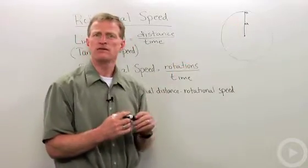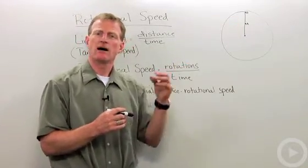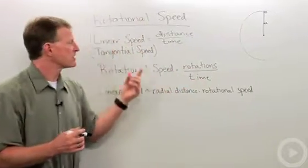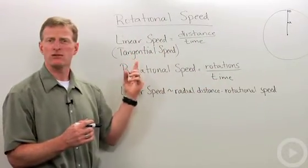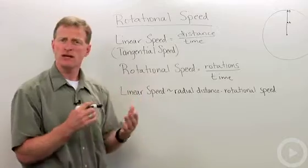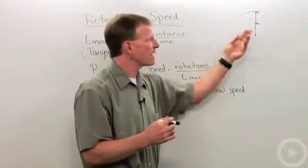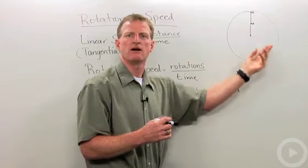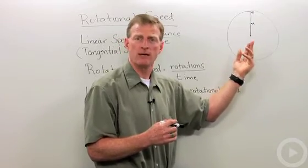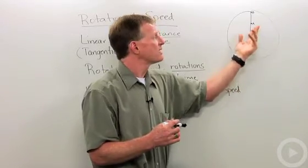Well, if we compare the speed of those two objects, it's very different if we're talking about the linear or tangential speed versus the rotational speed. So if we look at them both, they both have a rotational speed of 33 revolutions per minute.